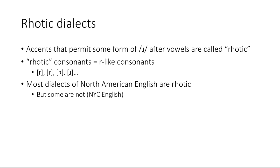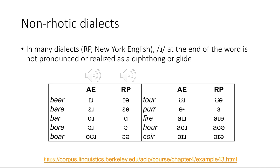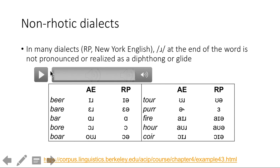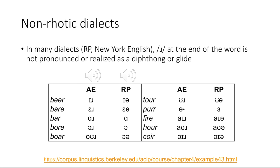To give a concrete example — rhotic consonants are consonants like R. Accents that permit some form of R after vowels in coda position are called rhotic. Most dialects of North American English are rhotic. However, in the UK and some dialects of North American English, R at the end of words — more specifically in coda position — is not pronounced, or is realized as a diphthong or glide. I'm going to play these words in American English and then received pronunciation: beer, bear, bar, bore, tour, fire, hour, choir.